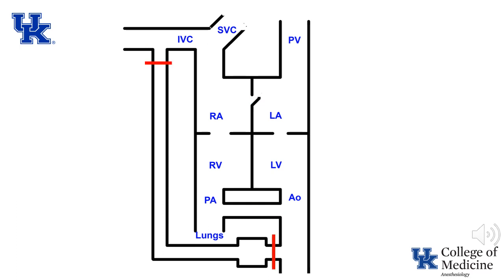The fetal circulation is dramatically impacted by two things that occur at birth. First, the umbilical cord is cross-clamped. This results in an immediate increase in systemic vascular resistance and aortic pressure. The decrease in aortic pressure differential results in decreased flow through the ductus arteriosus, which was largely due to the difference in pressure between the pulmonary artery and the aorta. Another consequence of the umbilical cross-clamp is that blood flow in the inferior vena cava is reduced, so venous return to the right atrium is also reduced and right atrial pressure is decreased. The second fundamental event at birth is that the neonate takes a breath, resulting in air entering the lungs. This results in a rapid decrease in pulmonary vascular resistance.